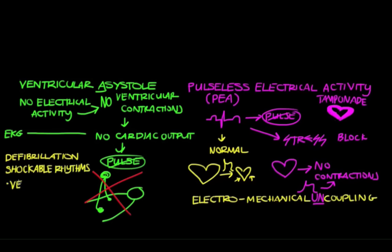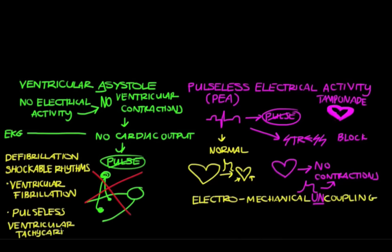Shockable rhythms include ventricular fibrillation, where the walls of the ventricles are spasming, and therefore they can't contract, and you're not going to circulate blood to the rest of the body, and pulseless ventricular tachycardia, meaning that there's some sort of abnormal conduction in the ventricles that cause the ventricles to pump at a dangerously high rate.